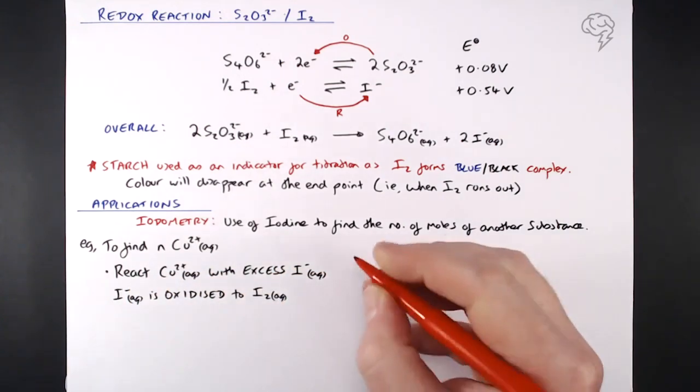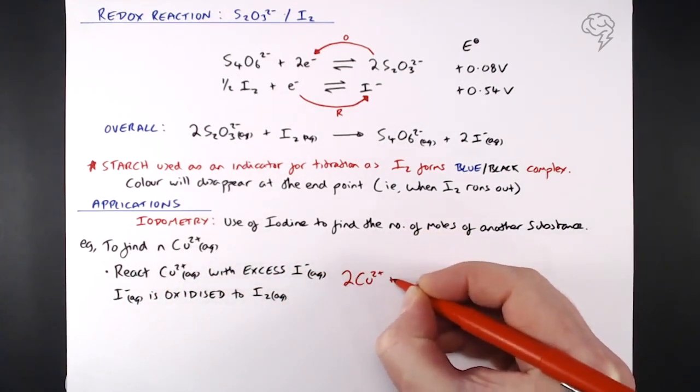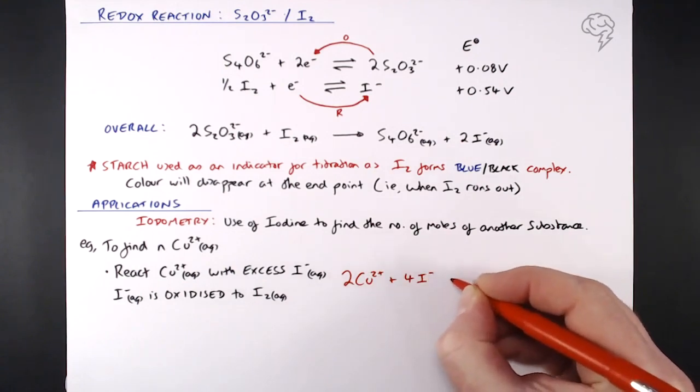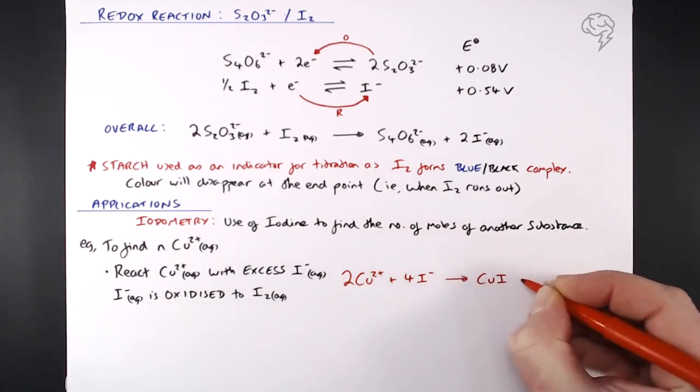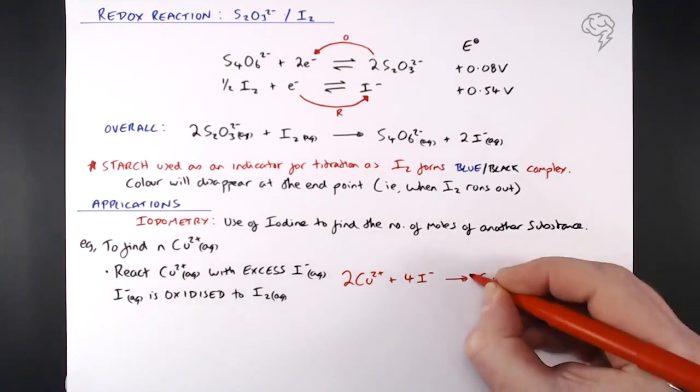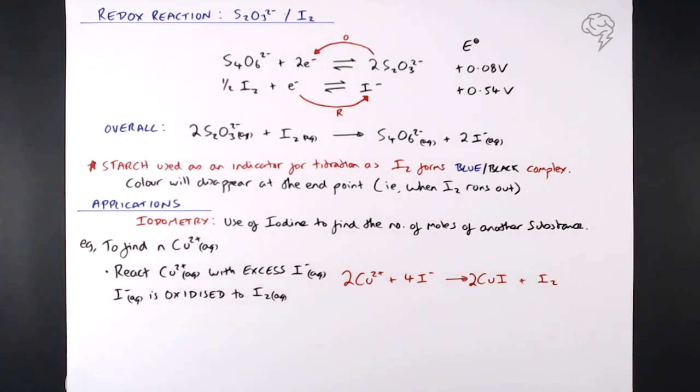In terms of an equation, this is what's happening. 2 Cu2 plus plus 4 I minus gives us 2 Cu plus and I2. Mustn't forget to put the two in there. So 2 Cu2 plus plus 4 I minus gives us 2 Cu plus and I2. So that's our initial reaction. It's almost like a back titration, this. So we flood it with iodide ions and we've got iodine being made here. Now we can use this iodine in the equation at the top.